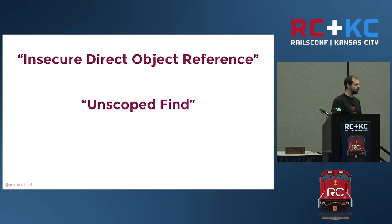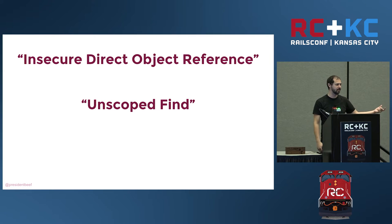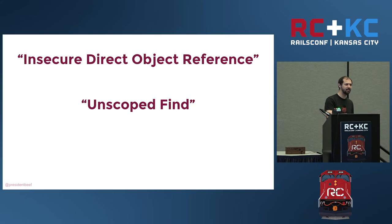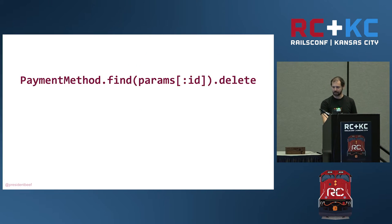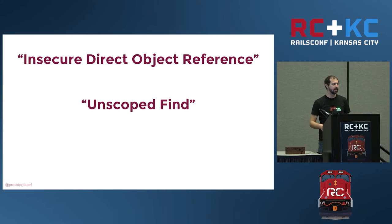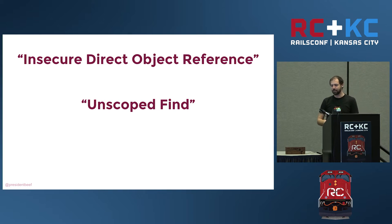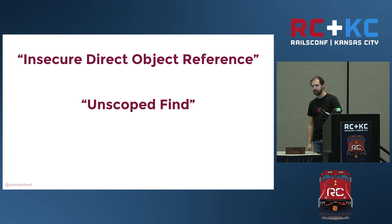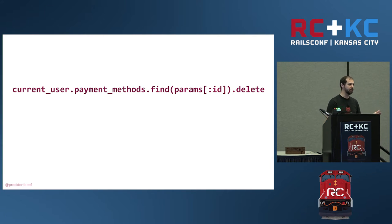In the back end, there was code that looked up the payment method from the ID parameter and deleted it. In the web security world, this is considered an insecure direct object reference — it's a direct object reference because that ID is the row in the database, and it's insecure because we're not checking that the person deleting that row actually owns it. There's another term for this: an unscoped find. The way you should do this is to scope it to the current user, then do your find for the payment method, then delete it.